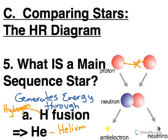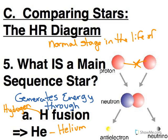We think of this as the normal stage in the life of a star. The fact that 90% of the stars we see fall on the main sequence tells us that about 90% of the lifetime of a star is spent as a main sequence star.